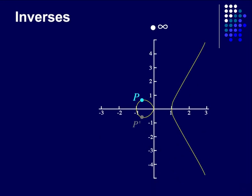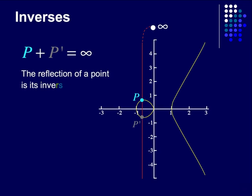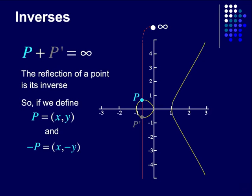If we have an identity, we should also have inverses. If we have our curve, a point and its reflection, then try adding them to each other, we get infinity. And because infinity is so special, the reflection of infinity is itself. So, a point plus its reflection is infinity, making the reflection of a point the point's inverse. If we define a point to be (x, y) and a negative point to be (x, -y), we can say that a point minus itself equals the identity, much like in regular addition.